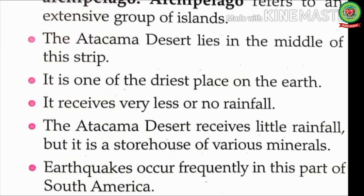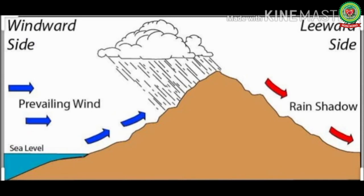The Atacama Desert lies in the middle of the strip. Here desert means a dry and sandy area. It is one of the driest places on earth — it receives very little or no rainfall. The Atacama Desert has hardly any rain; it is extremely dry and hot because it lies in the leeward side of a mountain. The windward side of a mountain receives more rainfall because prevailing winds carry moisture and strike the mountain, shedding moisture as rainfall. The leeward side does not receive rainfall because there is no moisture in the air — that is why this region is also called a rain shadow area.